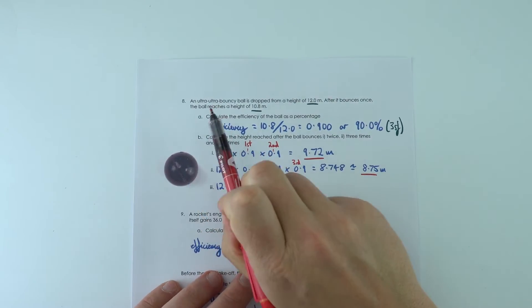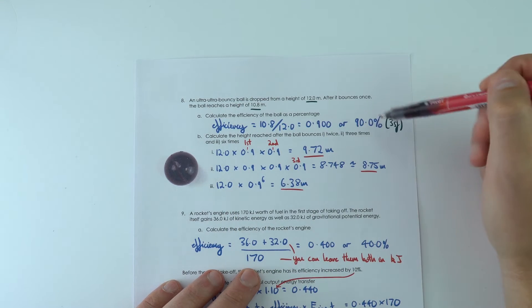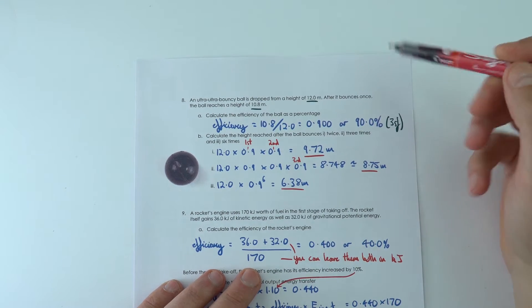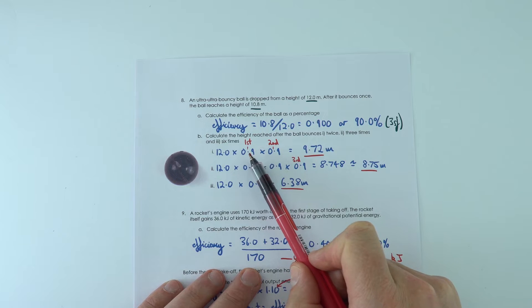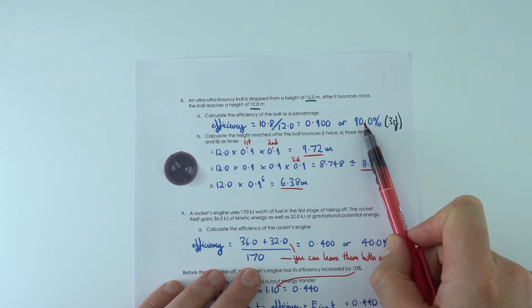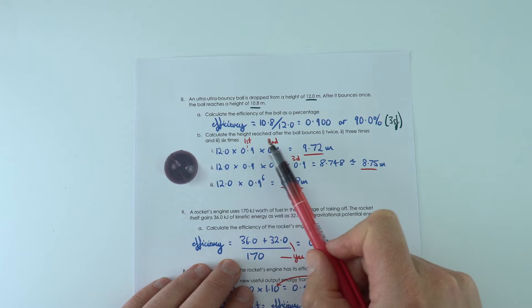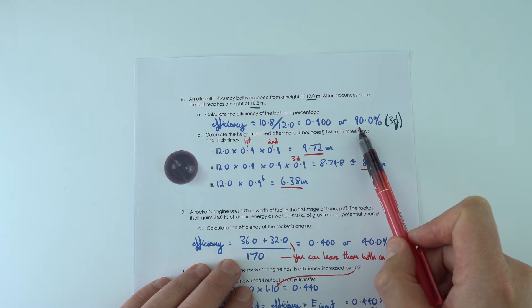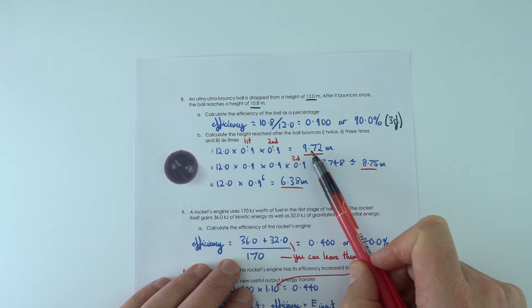Now this one here is going to be an ultra bouncy ball, really high efficiency, it's 90% efficient. And for this one over here effectively after one bounce it still has 90% of the energy, but then we have to take this new value, multiply it by 0.9 again, which is our 90%, to find that after two bounces...